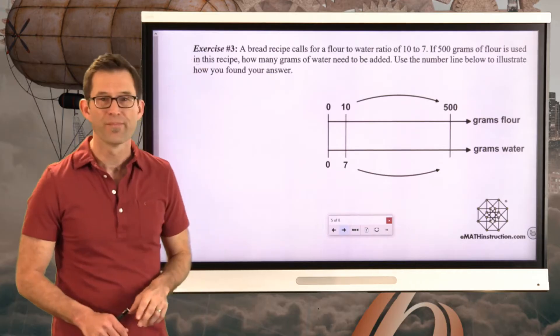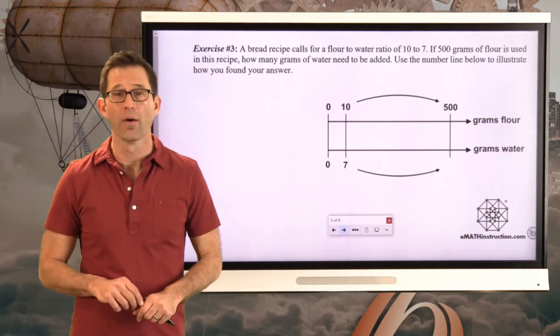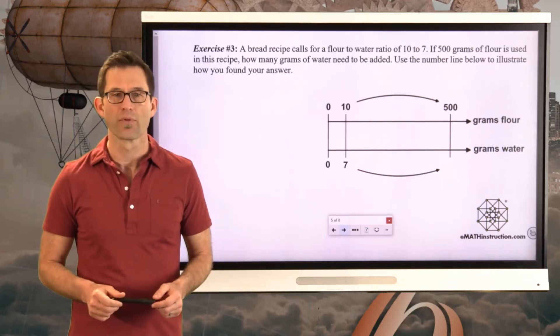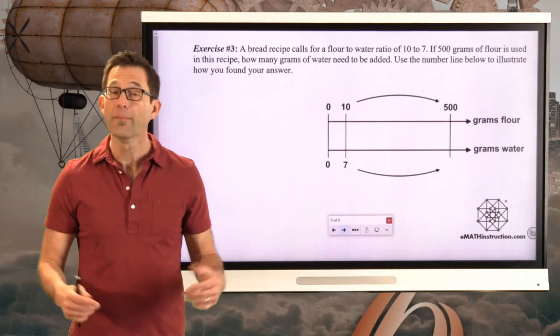Let's keep going on this. Now, double number lines are great when you can kind of write everything out. But what if that would be too painful? Let's take a look at exercise number 3. A bread recipe calls for a flour to water ratio of 10 to 7. If 500 grams of flour is used in this recipe, how many grams of water need to be added? Use the number line below to illustrate how you found your answer.